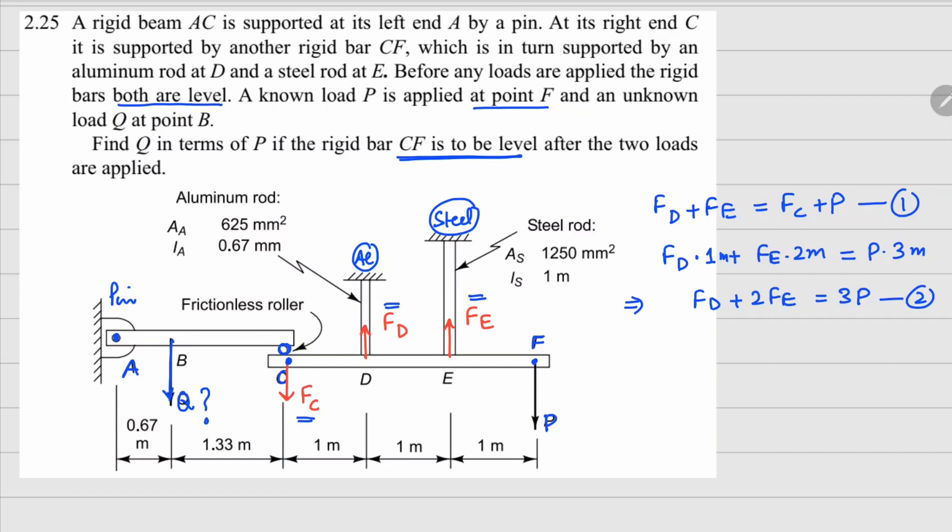So we have only two equations, so we need to look for one relationship in deformation. Now because the CF remains horizontal, the deformation in both of these bars needs to be exactly the same, so meaning the delta D has to be equal to delta E.